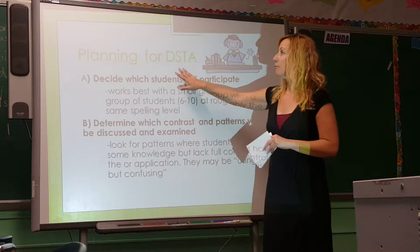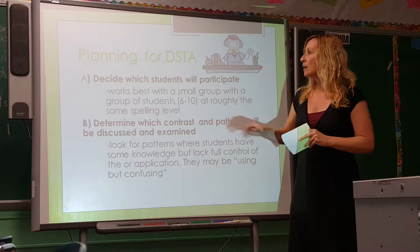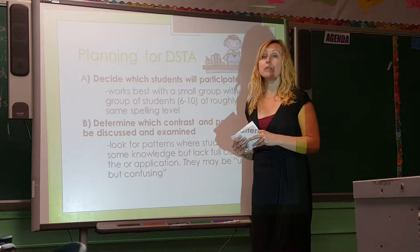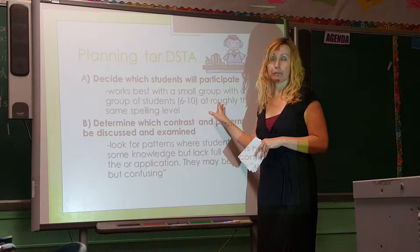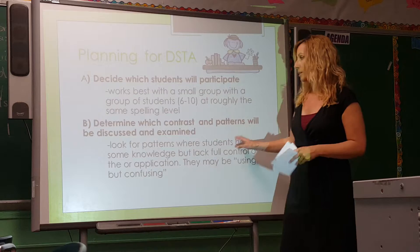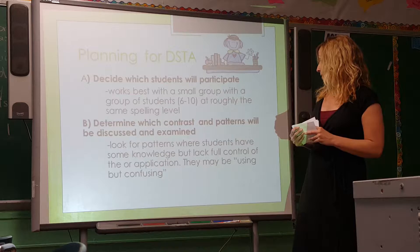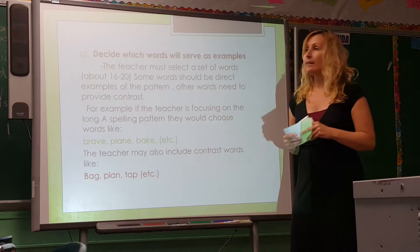As teachers, you have to plan — everything has to do with planning. You have to decide which students are going to participate. It works well with small groups, usually about 16 to 20 students at roughly the same spelling level. Determine which contrast patterns will be discussed and examined. Look for patterns where students have some knowledge but lack full control or application — they may be using but confusing these patterns.